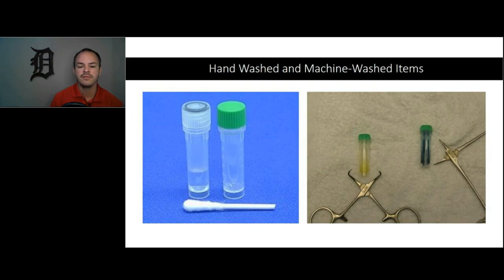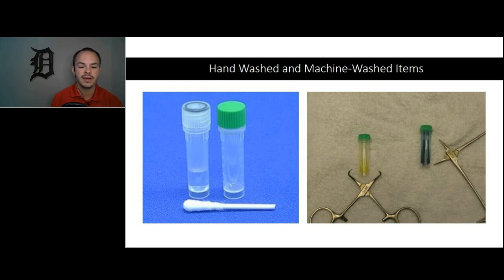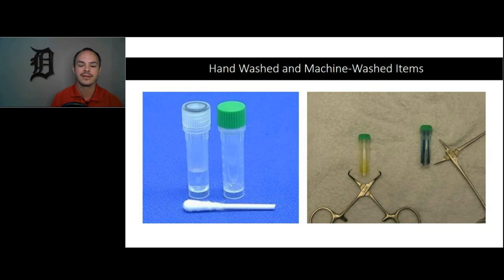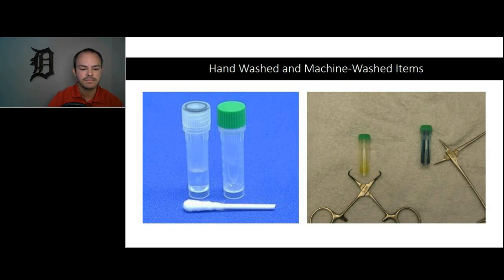Here is an example of a simple cleaning verification test. These are used for checking challenging items to be cleaned, whether in an automated washer or by hand. This particular test shows the presence of hemoglobin. If it turns positive, that instrument needs to go back for a repeat cleaning — it should not proceed to prep, pack, and sterilization. This helps us see soils that may not be easy to see with the unaided eye, and can confirm whether staining is actually blood. You can also get protein tests and ATP tests — all part of the cleaning verification line.